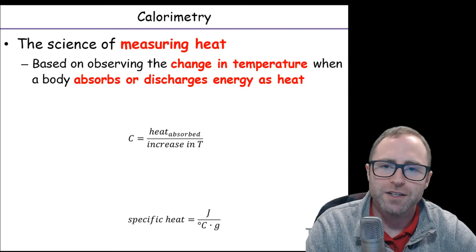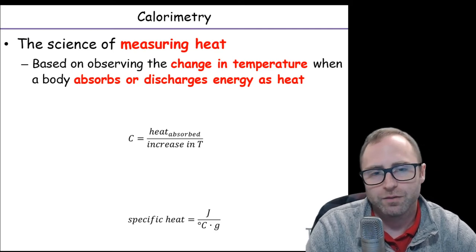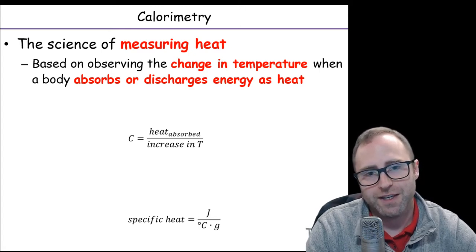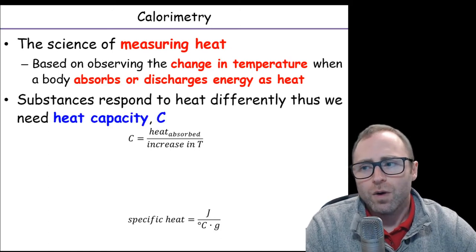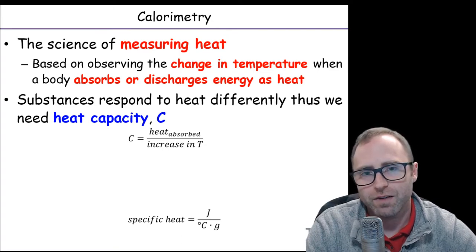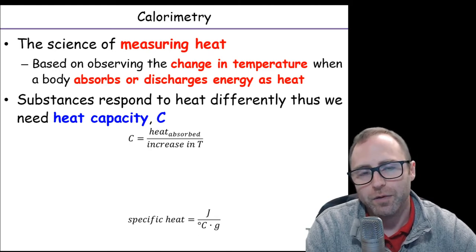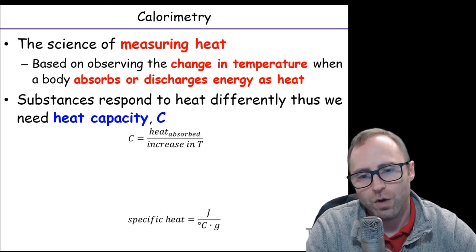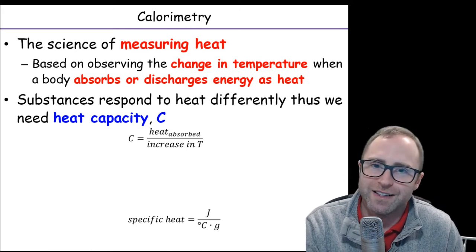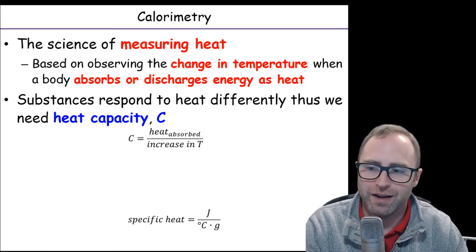Calorimetry is measuring the change in temperature when a body — meaning a system or surroundings — absorbs or discharges heat as energy. A substance is going to respond to heat differently based on intrinsic properties of the material itself, and we call that specific thing the heat capacity, defined as C.